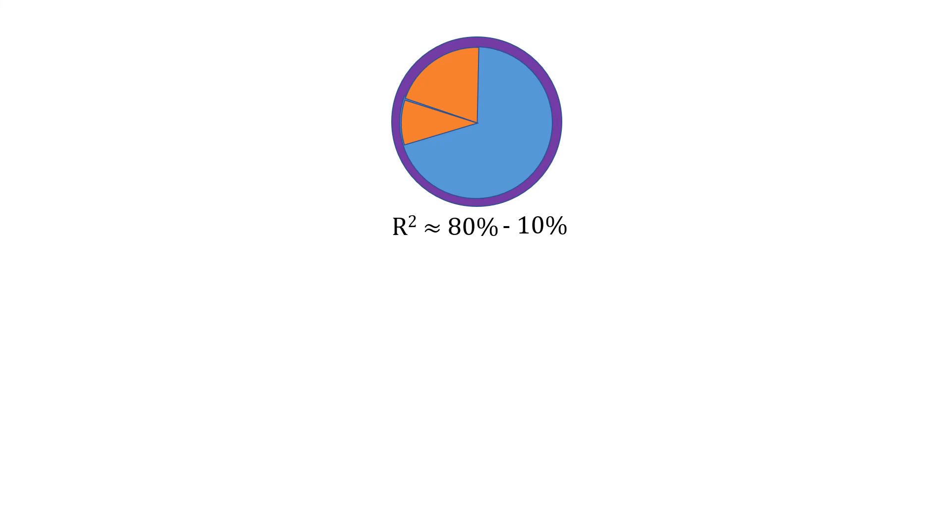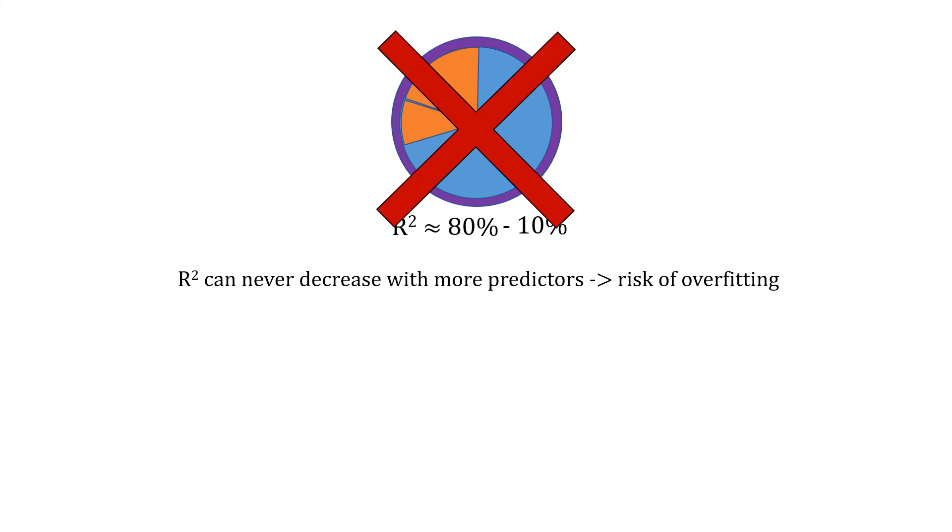Finally, r squared can only increase when you add more predictors, for instance in a regression. So it will approach one which will almost always imply overfitting. To guard against that you can calculate adjusted r squared which takes the number of predictors into account and corrects for this effect.